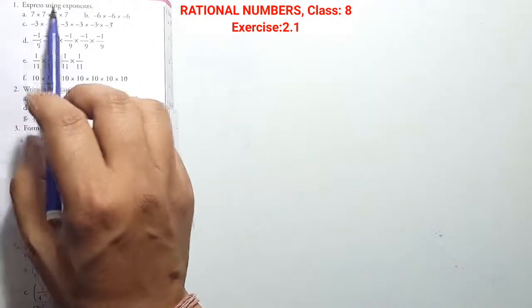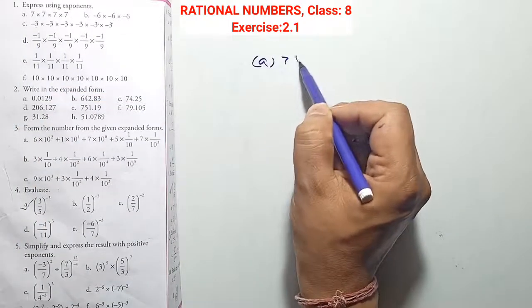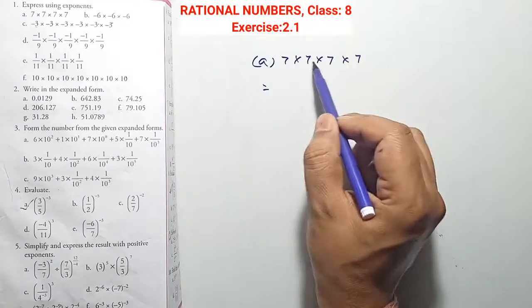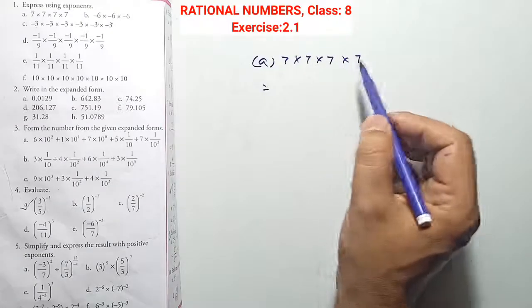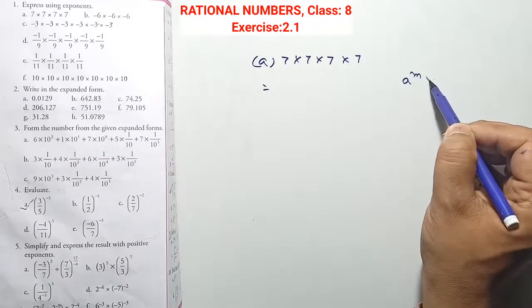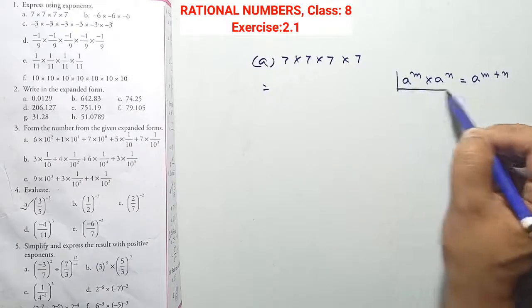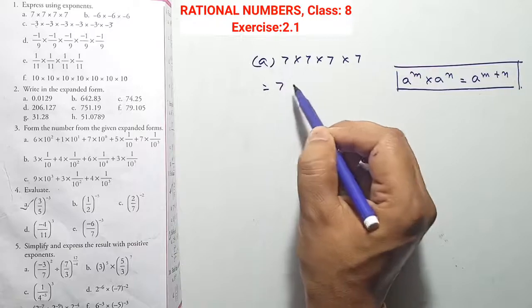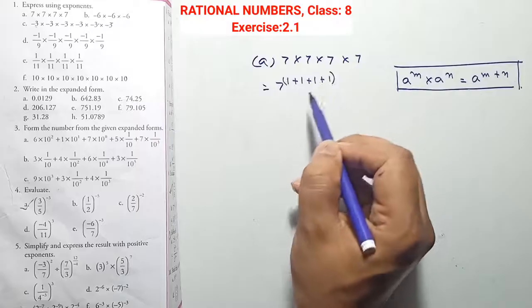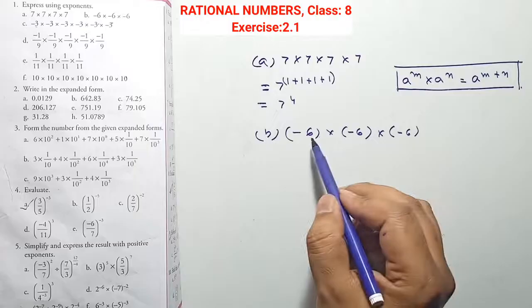XSS 2.1 Question 1: Express using exponents. Question A: 7 into 7 into 7 into 7. Counting the 7s — total four 7s present. Therefore we use the formula a^m × a^n = a^(m+n). So 7 power 1+1+1+1 = 7 power 4. This is our answer.